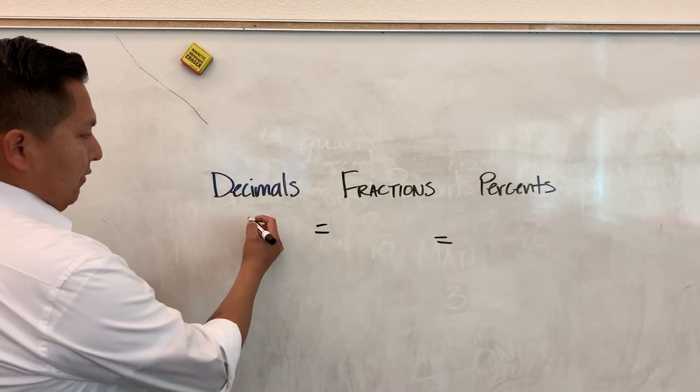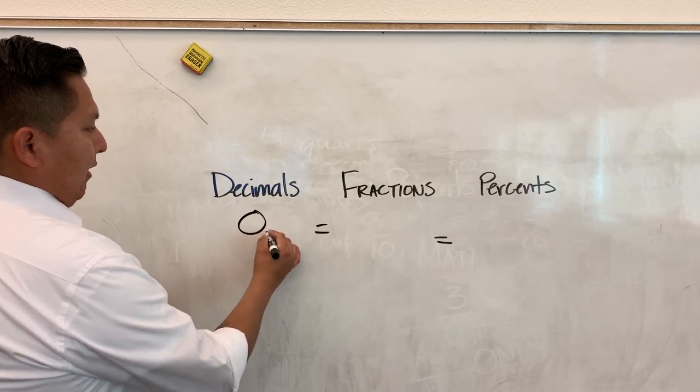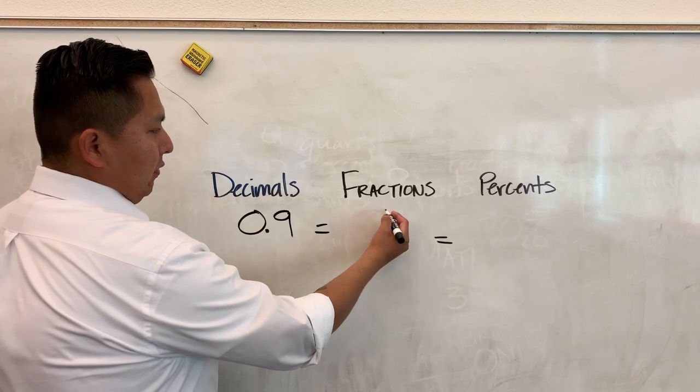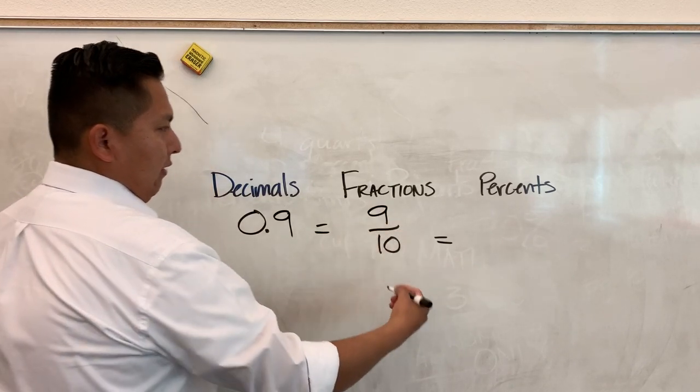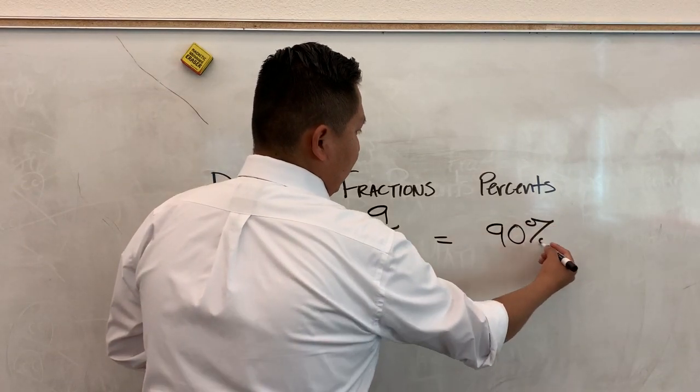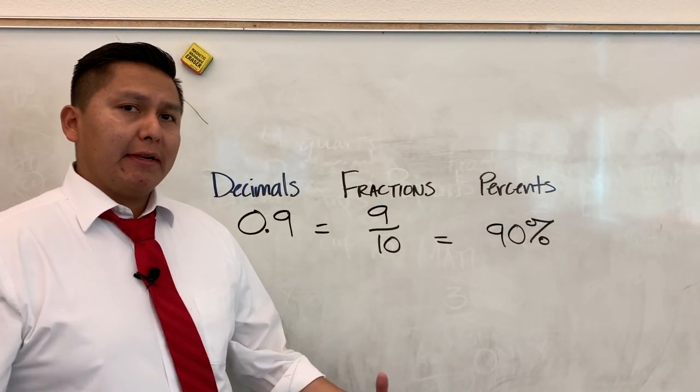Let's say we have the decimal 0.9. That would be equivalent as a fraction to 9 tenths, and that would be equivalent to 90%. Now what is the relation between these culturally?